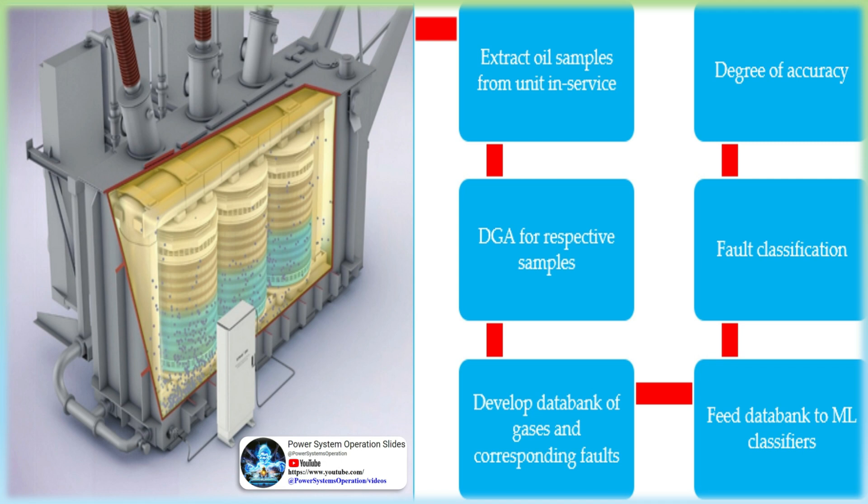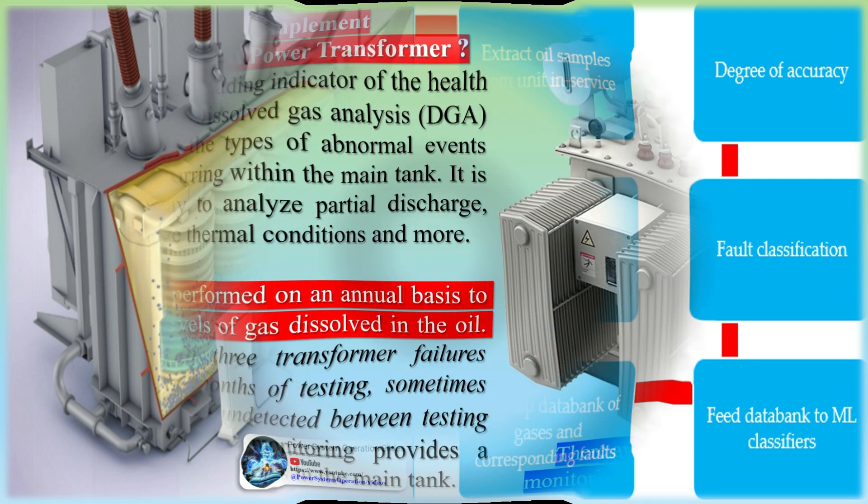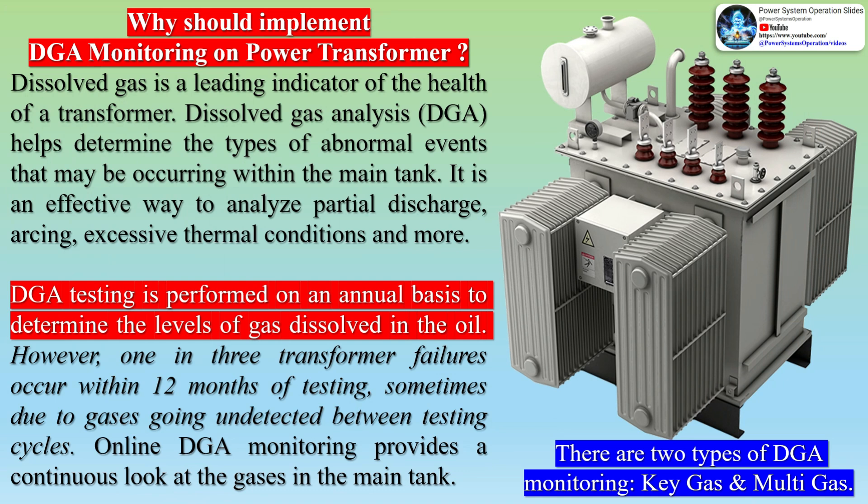DGA testing is performed on an annual basis to determine the levels of gas dissolved in the oil. However, 1 in 3 transformer failures occur within 12 months of testing, sometimes due to gases going undetected between testing cycles. Online DGA monitoring provides a continuous look at the gases in the main tank.